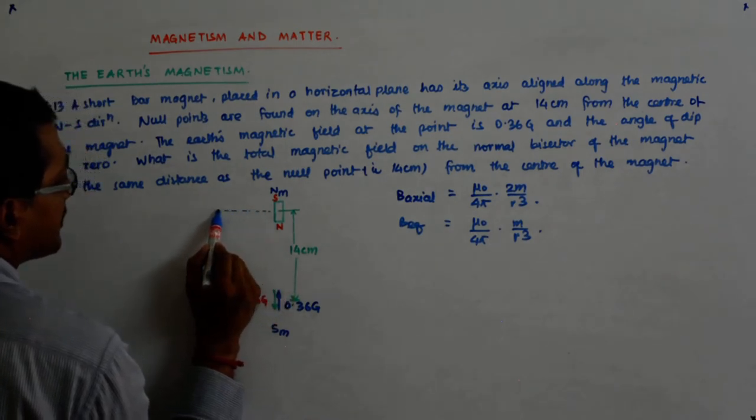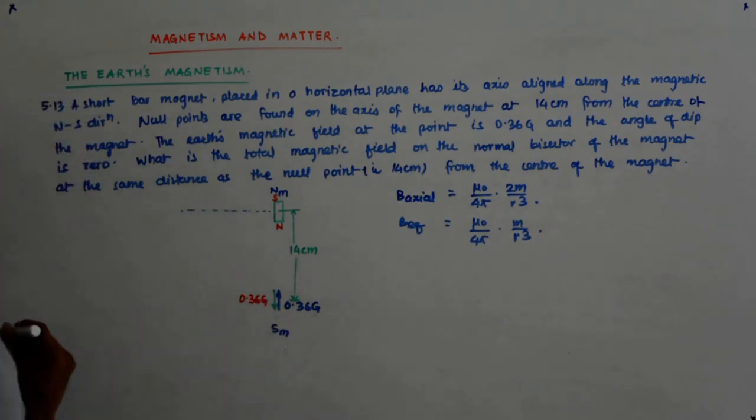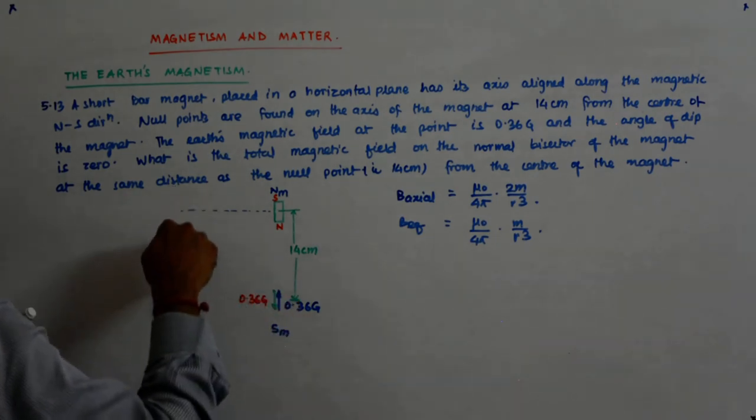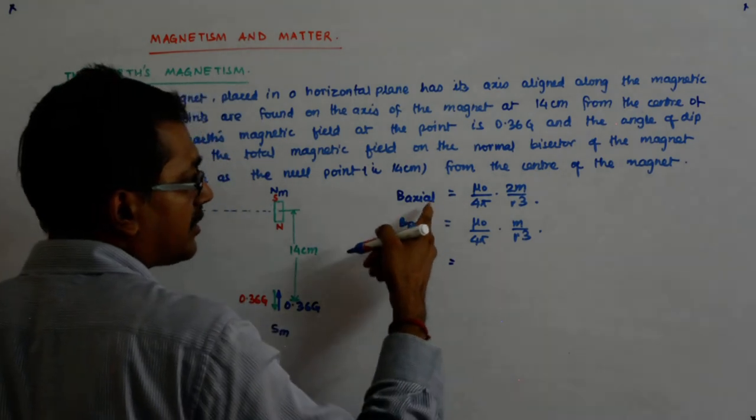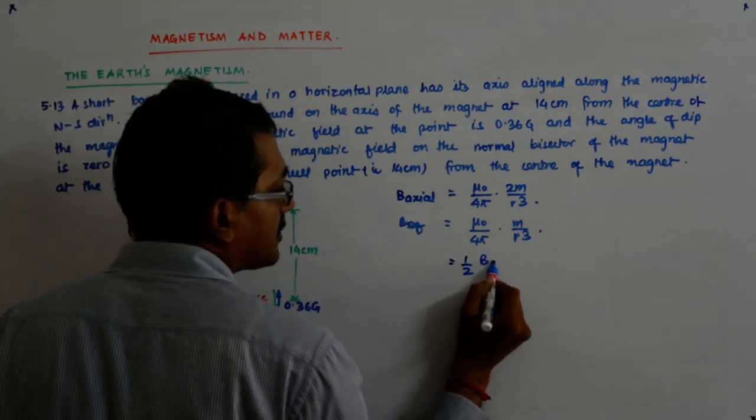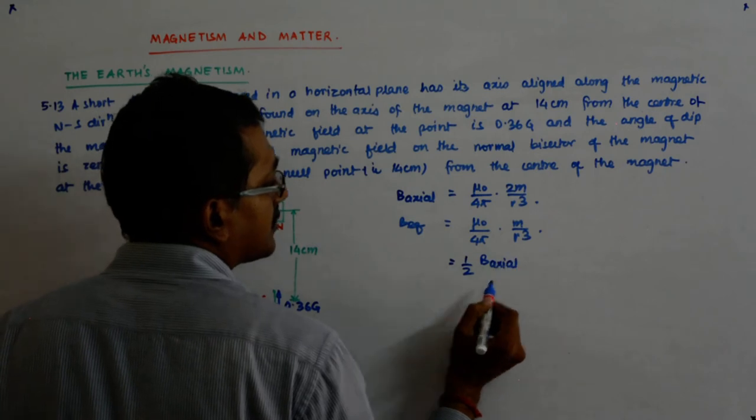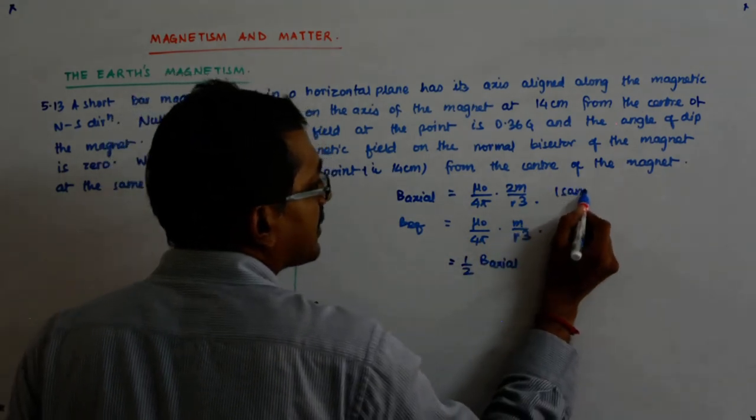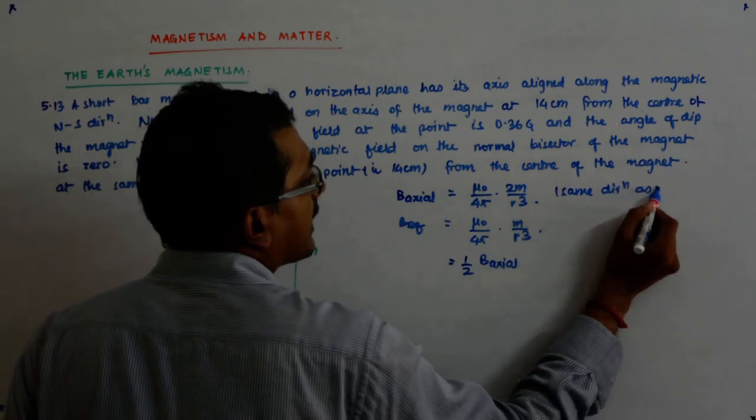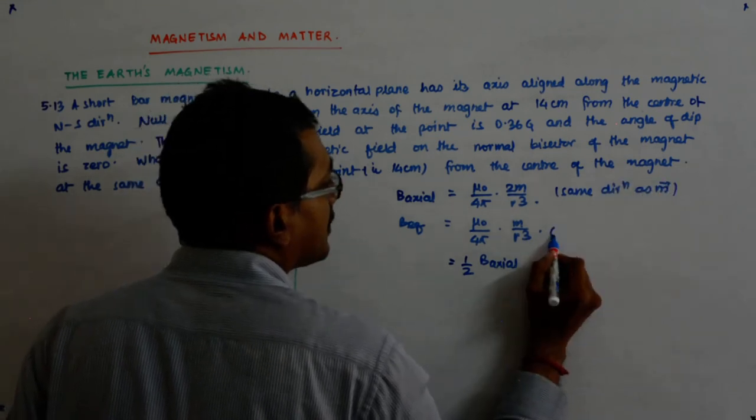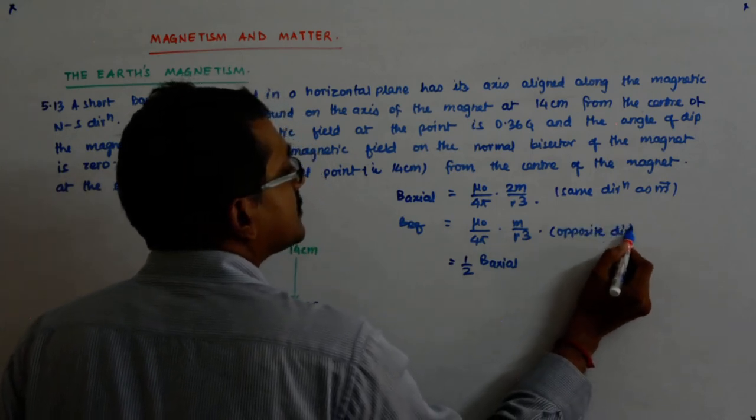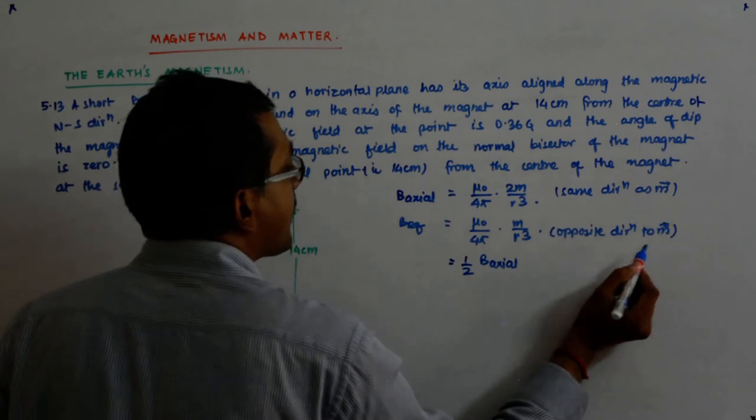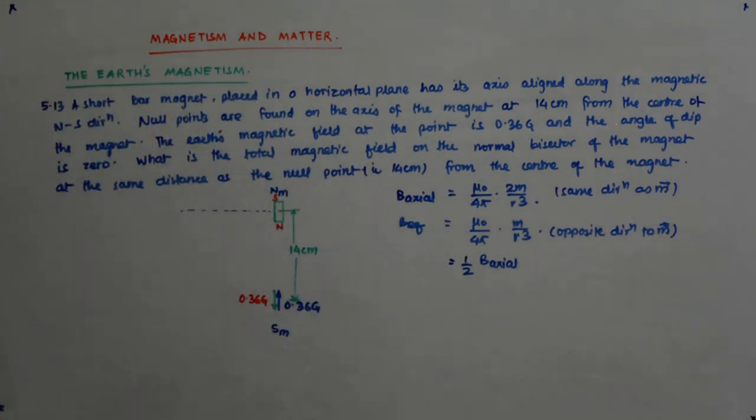So if I come the same distance here, then what happens? The magnitude is half of B axial. What is the direction? Here, same direction as M. Here, opposite direction to M. This is opposite direction to M.